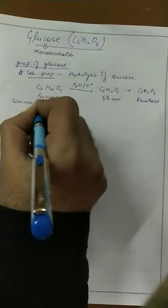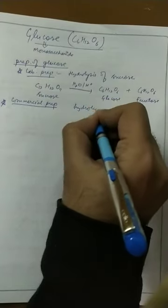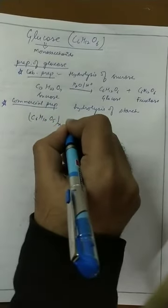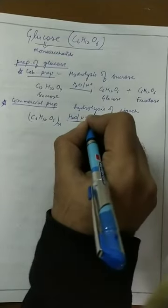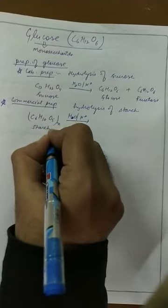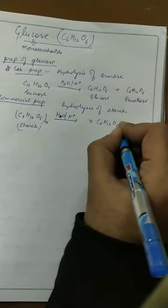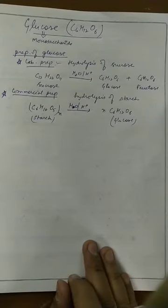For commercial preparation — large-scale preparation of glucose — it is prepared by hydrolysis of starch. Starch is another combined form of glucose. The formula of starch is (C6H10O5)n. Starch is a polymer of glucose, meaning a large number of glucose molecules are joined together. Upon acid hydrolysis of starch, we get N number of glucose molecules.